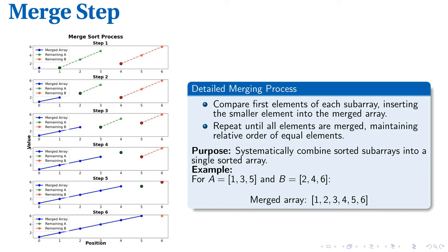The merging process is essential. Compare the first elements of each subarray and insert the smaller one into the merged array. Then move the pointer in the subarray with the smaller element to its next position. Continue this comparison and insertion process until all elements from both subarrays are added. Maintaining the order of equal elements preserves the sort's stability. For illustration, consider arrays A = [1, 3, 5] and B = [2, 4, 6]. First, compare 1 and 2 — since 1 is smaller, it goes into the merged array. Next, compare 3 and 2 — 2 is smaller and gets inserted next. The final merged array is 1, 2, 3, 4, 5, 6. This method ensures an ordered, stable merged array.